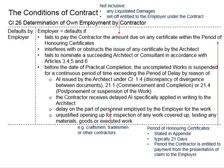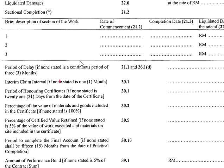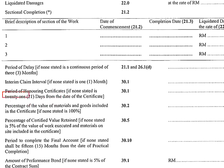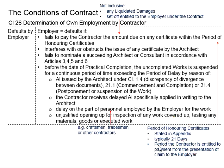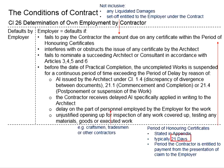This refers to the amount supposed to be given to the contractor within the period of honouring certificate. This period is normally clearly specified in the appendix of the contract. If nothing is written there, it defaults to 21 days from the date of the certificate — the interim certificate where the contractor claims for work done. Within this 21-day period, the contractor is entitled to payment from the presentation of the claim to the employer, meaning payment should be made within 21 days of the claim being presented.